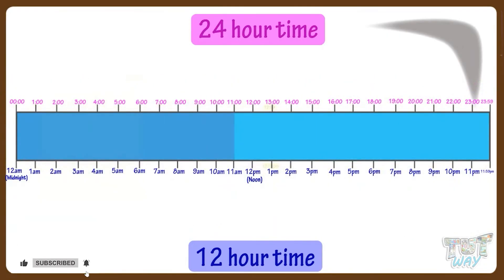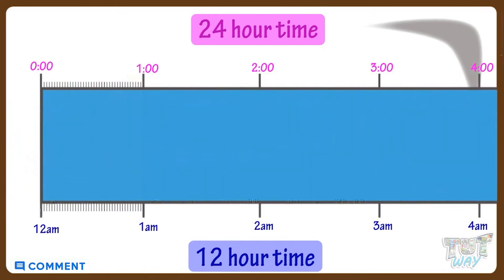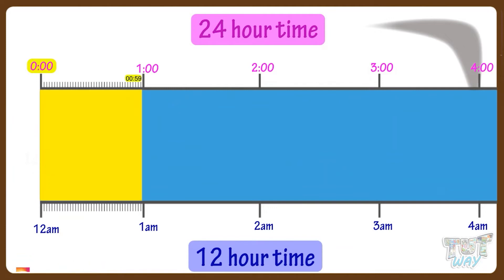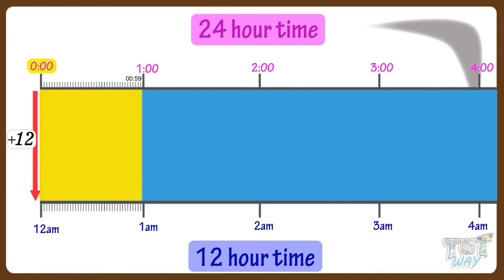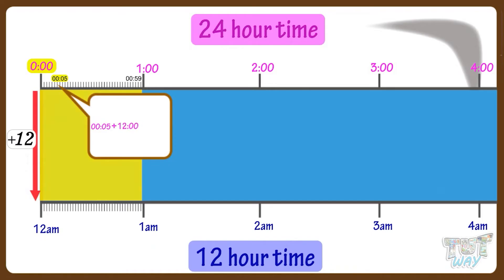Now let's learn converting back from 24-hour clock system to 12-hour clock system — that is, a.m./p.m. time. For all times from 0 hour (12 midnight) to 0:59, we add 12 hours to get the time in a.m. For example, if it's 0:05, add 12 hours and you get 12:05 a.m.